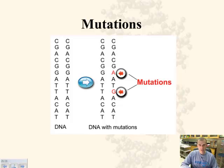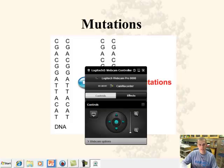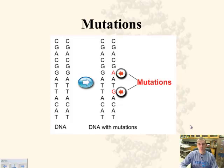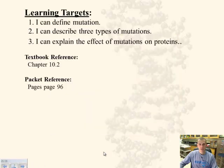This screencast will go through the basic mutations that occur within the DNA sequence. In the previous one, we talked about protein synthesis and the making of the protein. Your learning targets: you should be able to define mutations, describe the three types of mutations, and understand the effect of these mutations on what protein is being coded for. The text reference is chapter 10.2, and you should have page 96 in your packet, your screencast notes, your template sheet, and your organizer.